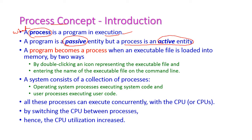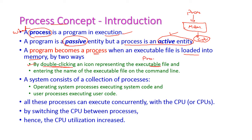First, we have to load the program into memory, then the program will become a process. The CPU can access and execute this program from memory. We can load a program in two ways: by double-clicking the executable file, or by entering the name of the executable file in the command line. By these two ways, we can convert the program into a process.